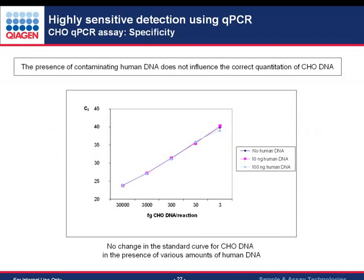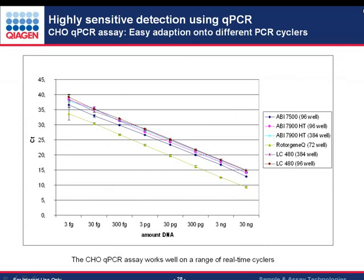We also confirmed that human DNA, as the most typical contaminant, does not affect the assay. We spiked different amounts of human DNA into the assay and compared the standard curve, which remains essentially unchanged.